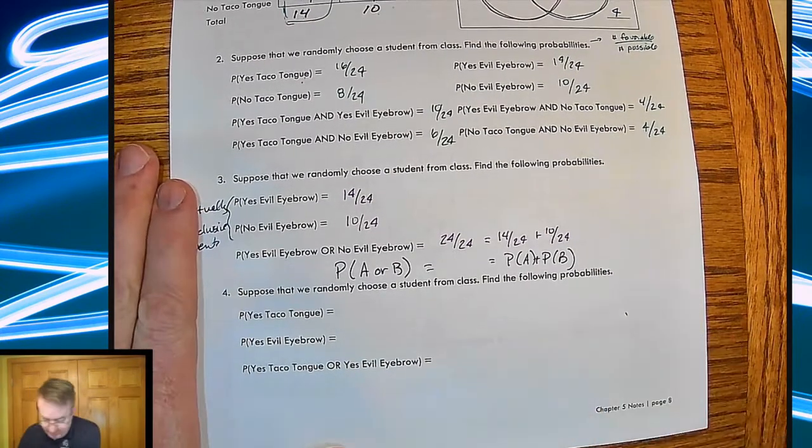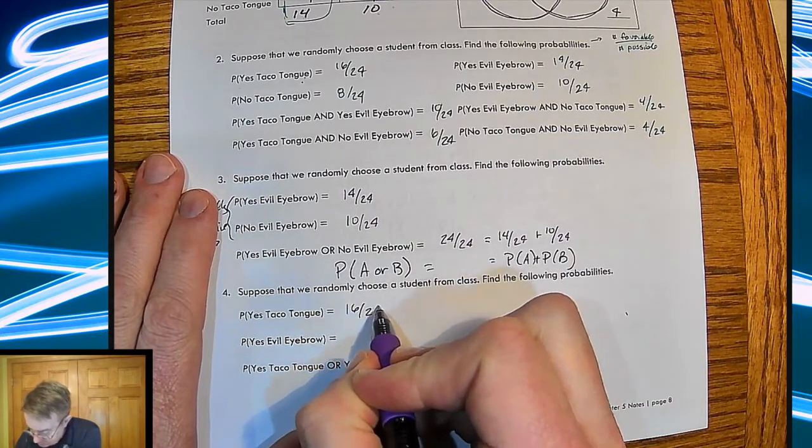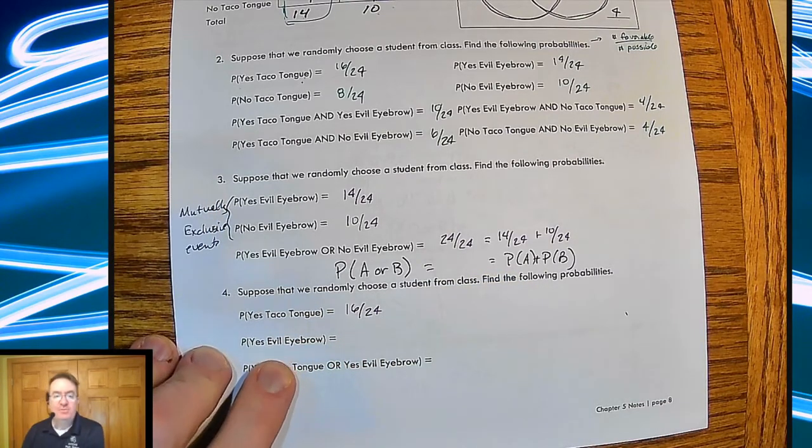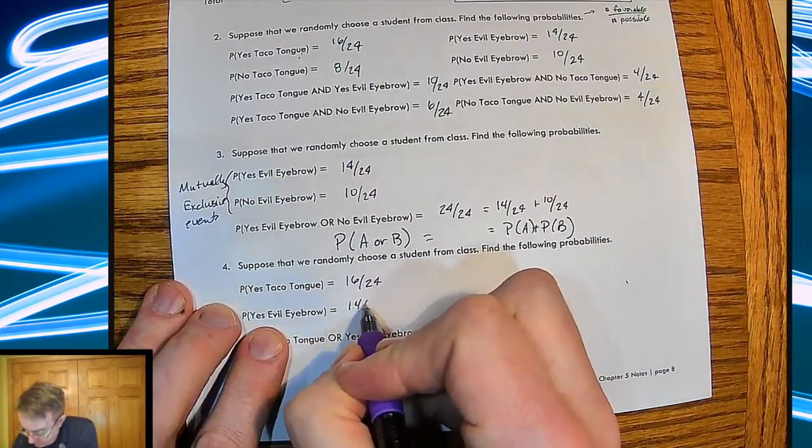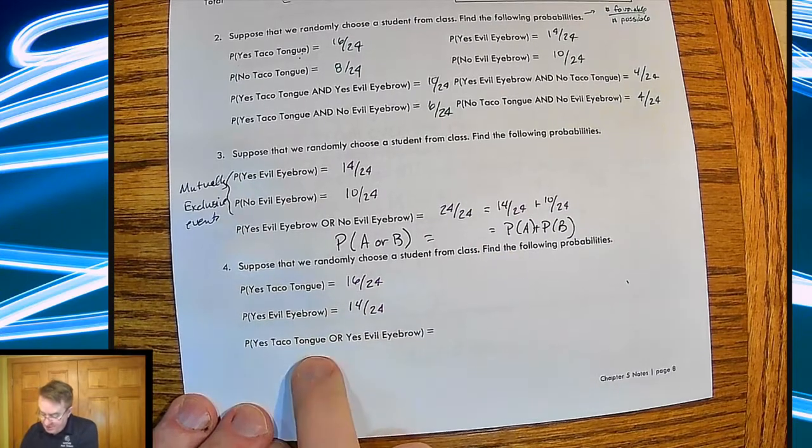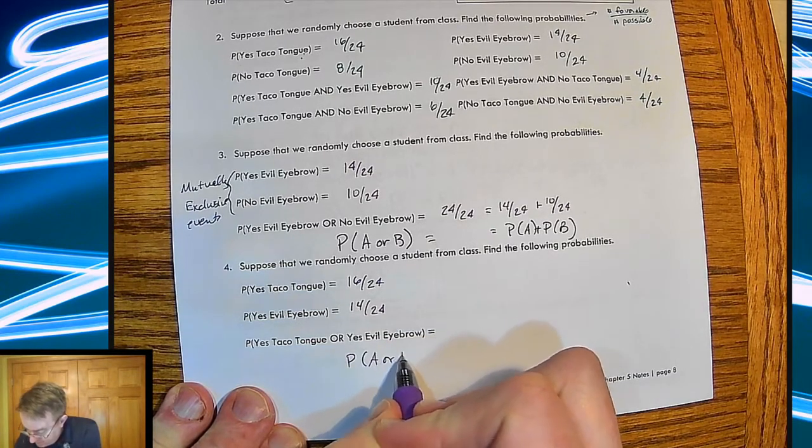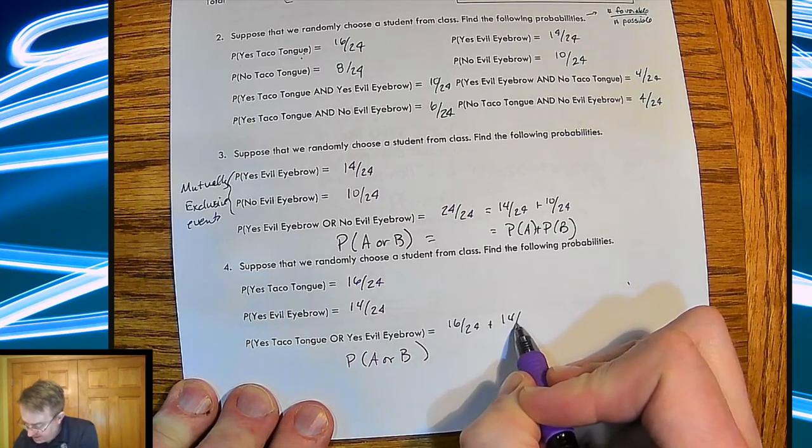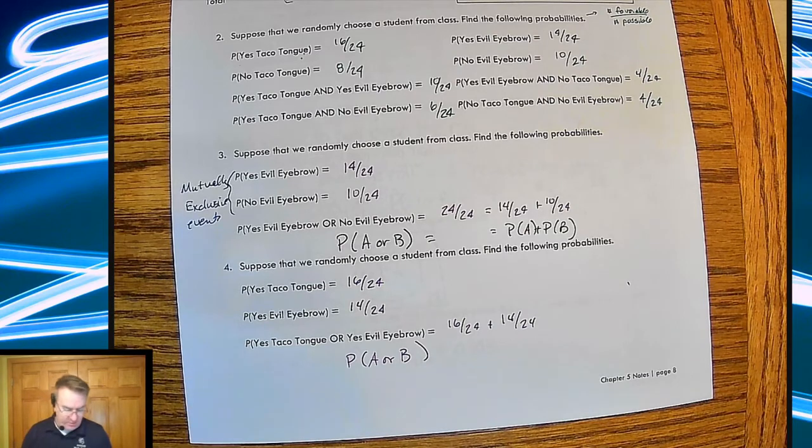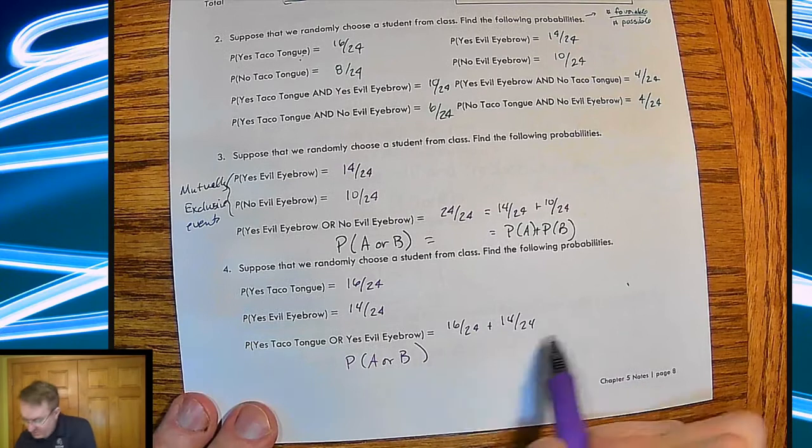So let's check the next one. Suppose we randomly choose a student from the class. What's the following probabilities? What's the probability of getting a taco tongue? The probability of a taco tongue, we said, was 16 out of 24. Evil eyebrow. What's the probability of getting an evil eyebrow? Evil eyebrow. 14 out of 24. So what's the probability of yes to taco tongue and yes to evil eyebrow? All right, so probability of A or B. So let's see, that'd be 16 out of 24 plus 14 out of 24, which would equal 30 out of 24. Yeah, exactly. That doesn't make any sense.